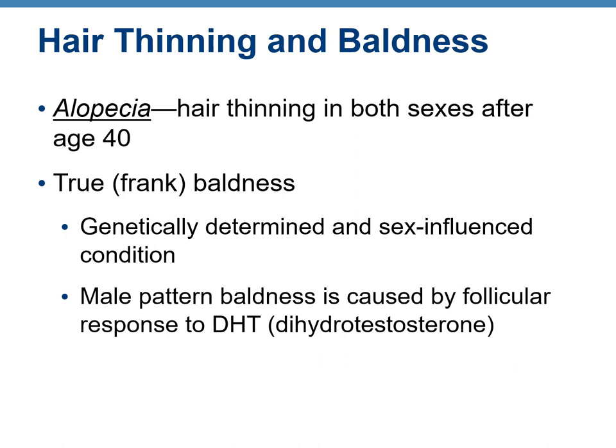Alopecia is hair thinning that occurs in both sexes after age 40. It is not the same as true or frank baldness, which is a genetically determined and sex-influenced condition caused by the response of hair follicles to DHT — dihydrotestosterone.